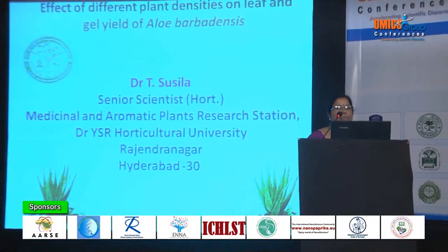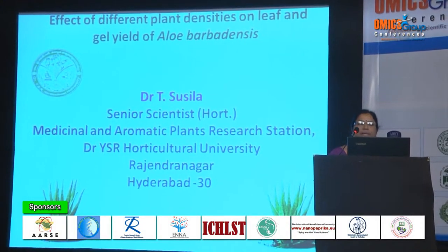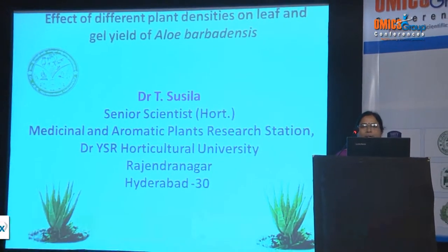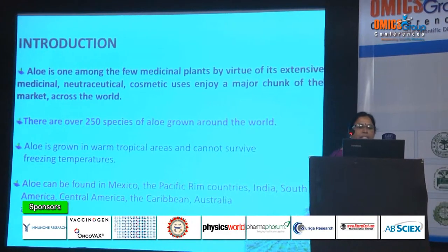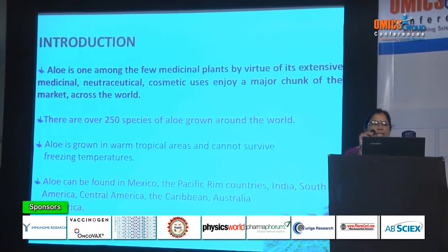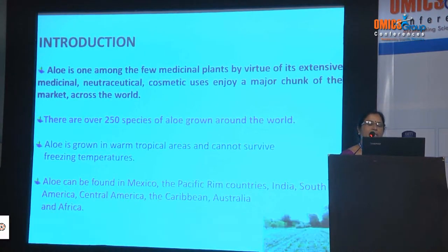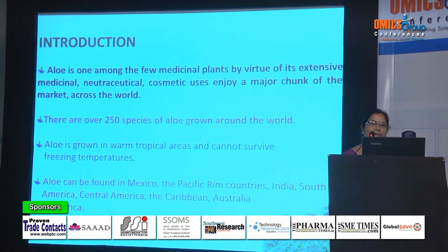I am going to present my work on the effect of different plant densities on leaf and gel yield of Aloe barbadensis. Aloe is one among the few medicinal plants that, by virtue of its extensive medicinal, nutraceutical, and cosmetic uses, enjoys a major chunk of the market across the world. There are over 250 species of Aloe grown around the world.